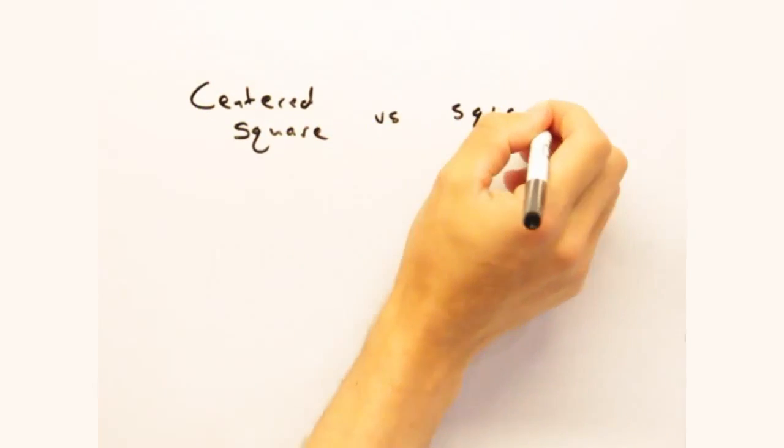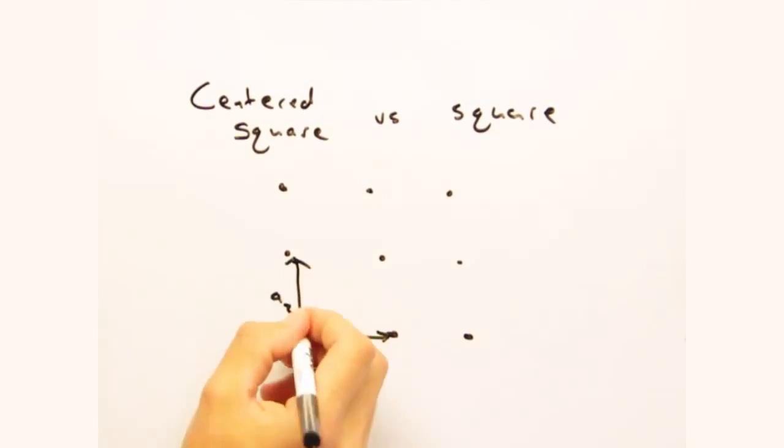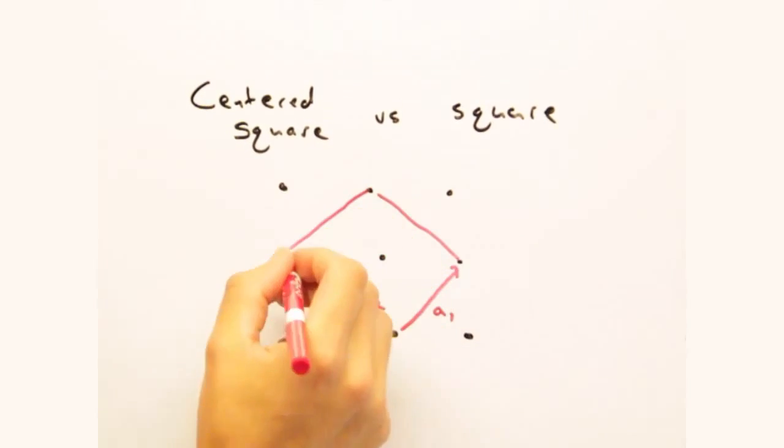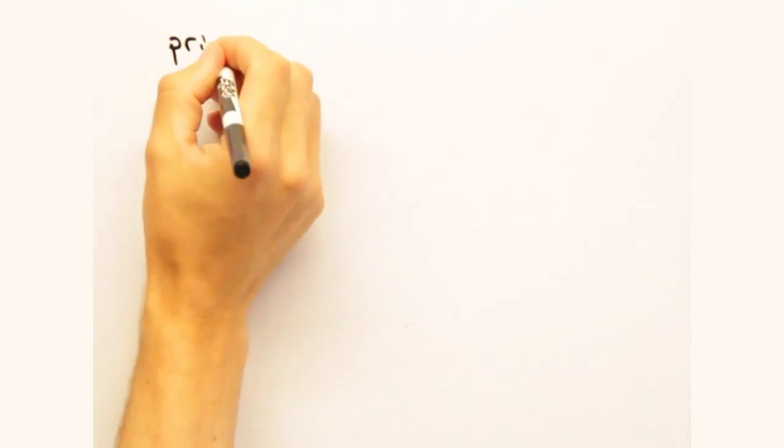Previously we saw that making a centered square cell versus just a square cell didn't reveal anything new. So let's see if that holds true for the reciprocal space.